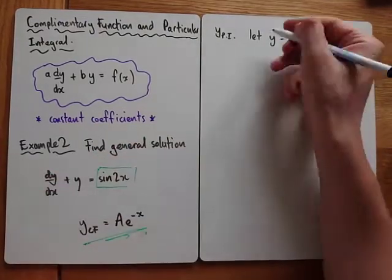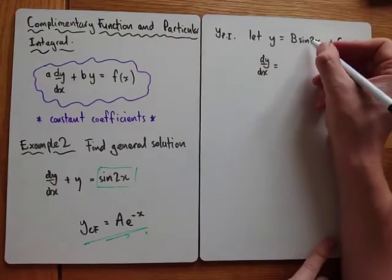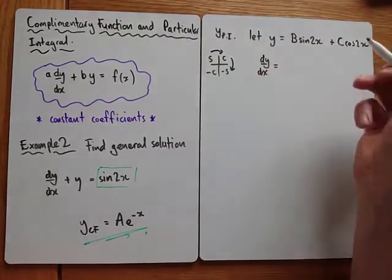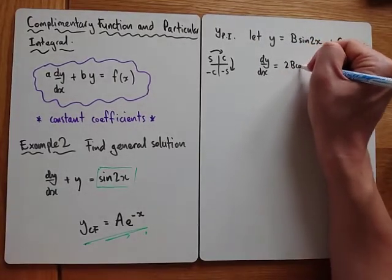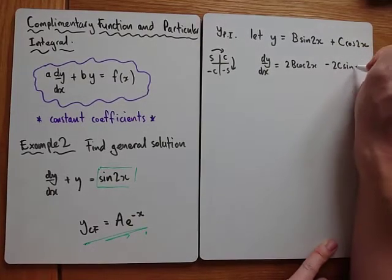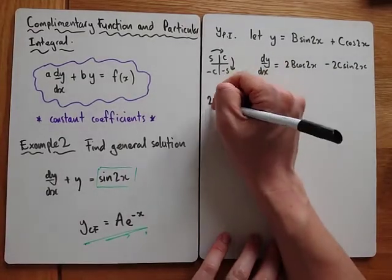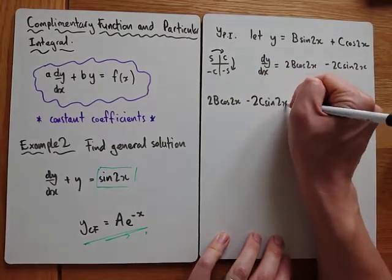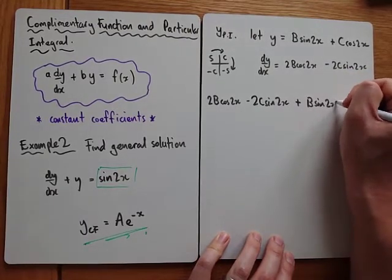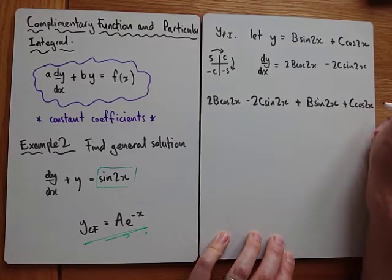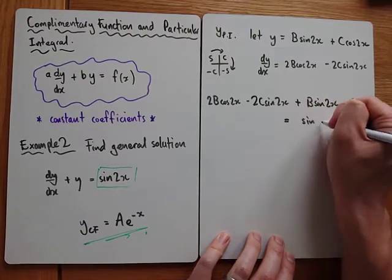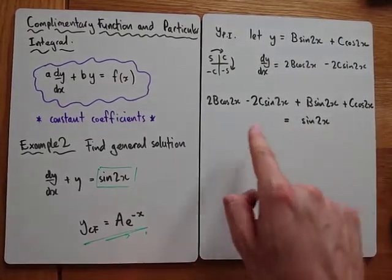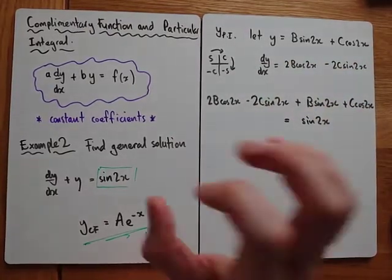Once we've decided what our particular integral is — let's say y = B sin 2x + C cos 2x — before we can substitute it into the equation we just differentiate it, because we need to substitute in for dy/dx as well. Differentiating, we go clockwise multiplying by the coefficient: 2B cos 2x minus 2C sin 2x. Then substituting into the equation: dy/dx plus y gives 2B cos 2x minus 2C sin 2x plus B sin 2x plus C cos 2x, and all of that equals sin 2x. It's a bit of a mess but there's a key step we can do now — whatever's on the left is the same as the right, so we can compare terms.